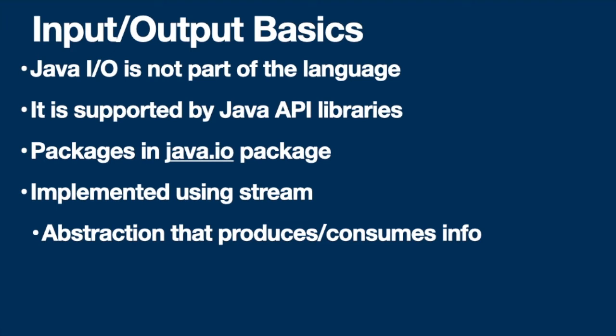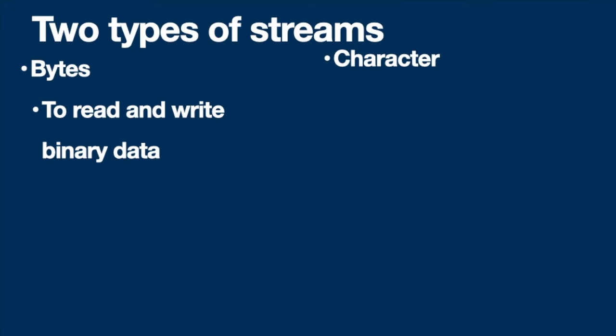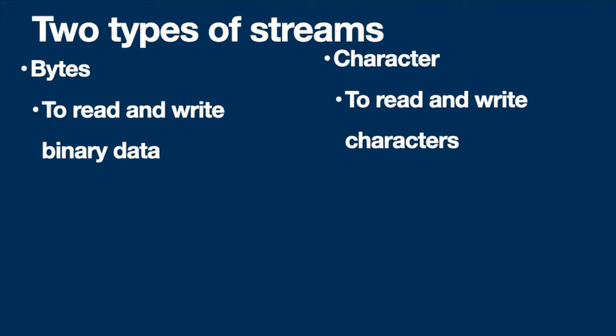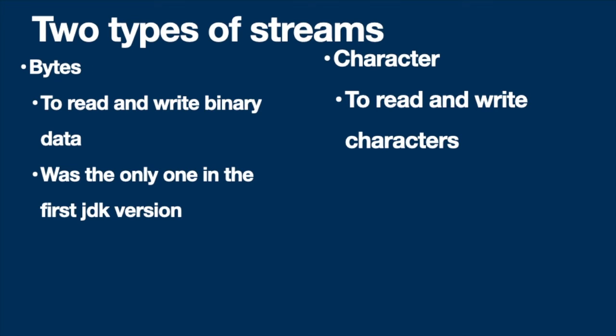The stream abstraction is implemented in two ways: the byte input/output library and the character input/output library. Byte streams are used to read and write raw byte data, while character streams are used to read and write character data. Byte streams were the first to be included in the Java library — they were the only ones in the first JDK release, and character streams were added in a later version.